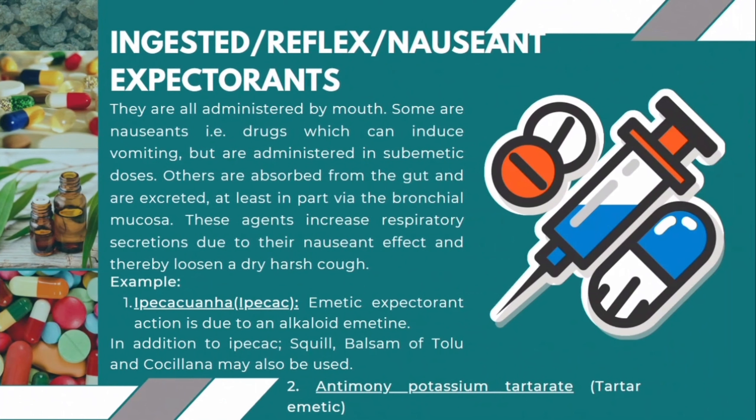Reflex or nauseant expectorants are all administered by mouth and some are nauseant, which can induce vomiting, but are administered in sub-emetic doses. Others are absorbed from the gut and are excreted at least in part by the bronchial mucosa. These agents increase respiratory secretions due to their nauseant effect and thereby loosen a dry harsh cough. Examples include ipecac and antimony potassium tartrate.